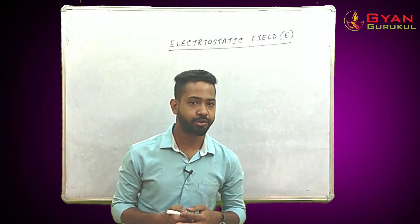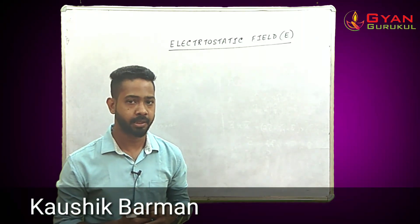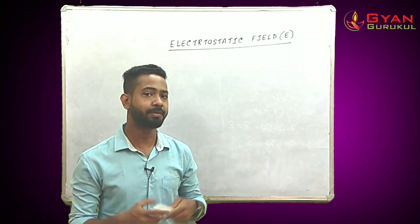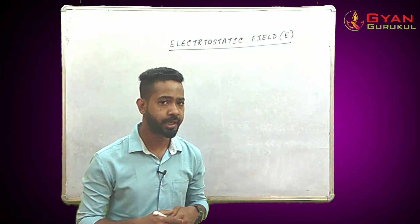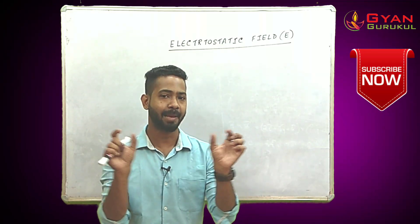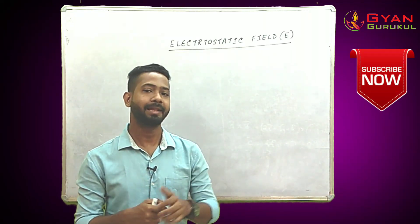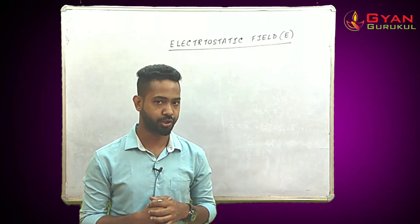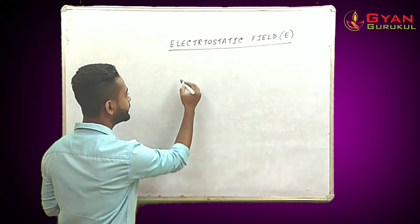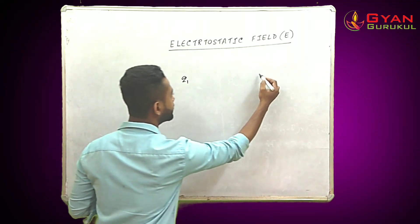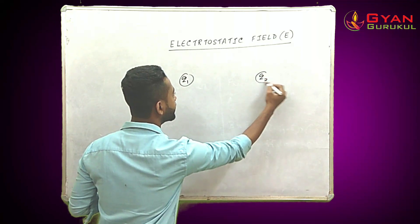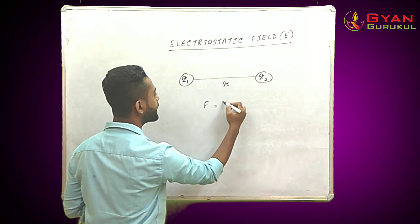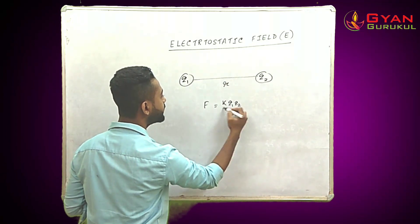Welcome back to the next video on electrostatics. Today we'll be discussing electrostatic field. Previously, we discussed electrostatic force, where we learned that if two charges q1 and q2 are separated by a particular distance r, there is a force of attraction or repulsion between them. The electrostatic force was given by k q1 q2 / r squared.